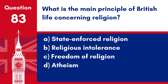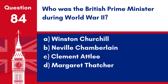Question 83. What is the main principle of British life concerning religion? a. State-enforced religion. b. Religious intolerance. c. Freedom of religion. d. Atheism. Answer: c. Freedom of religion. The main principle concerning religion in British life is freedom of religion, allowing individuals the liberty to follow any religion or none at all.